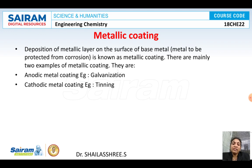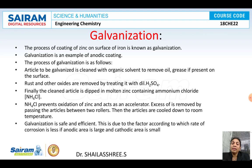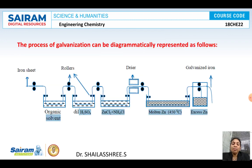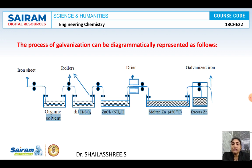Here we are going to discuss the galvanizing process, also called galvanization. The diagrammatic representation is shown here. It is used for domestic as well as industrial components where we need to protect the metal from further corrosion. How is it done? First, the metal is cleaned by treating it with an organic solvent to remove organic impurities like oil and grease present on the metal surface.